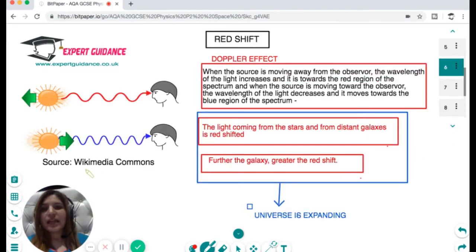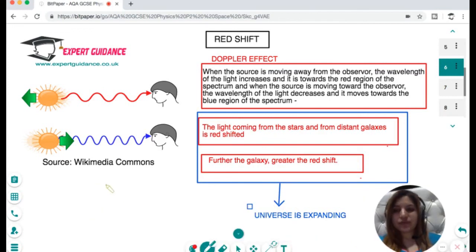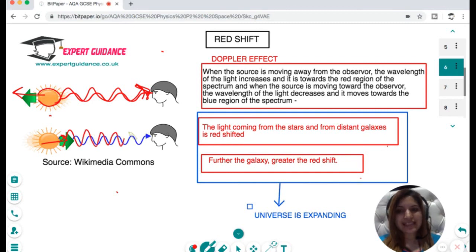Now, what is redshift? To understand redshift it is very important you understand this figure. If the source is moving away from you, you will see that the wavelength of the light is more and it is shifted more towards the red region. If the source is moving towards you, then the wavelength of the wave will be less and it will be more blue shifted.